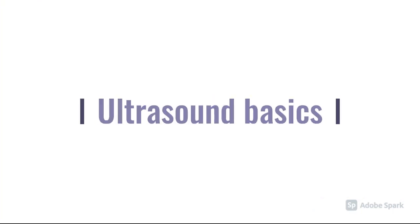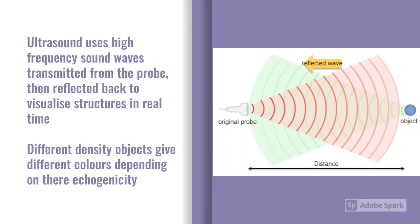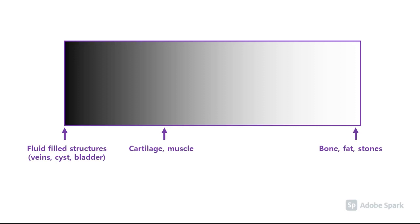Ultrasound uses high frequency sound waves transmitted from the probe and then reflected back to help visualize structures in real time. Structures look differently depending on what they are and their consistency and density. Bone, fat, and some stones often appear very bright — very white. Cartilage, muscle, and other soft tissues are relatively dark. Fluid-filled structures, i.e. mainly veins, arteries, and things like cysts, appear black.